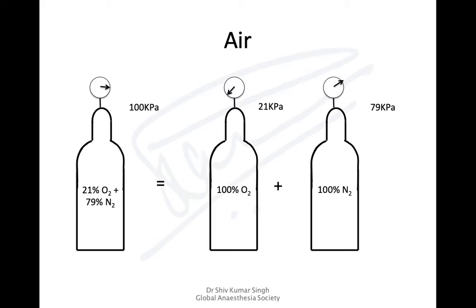The same applies to air: with 21% oxygen and 79% nitrogen, if separated out in the same volume, oxygen will exert a pressure of 21 kPa and nitrogen will exert 79 kPa, and the total equals 100 kPa — the same pressure as both together in the cylinder.